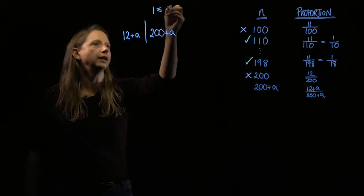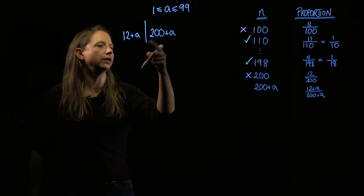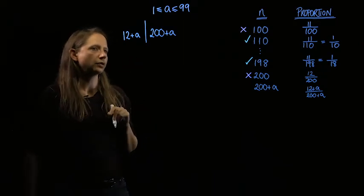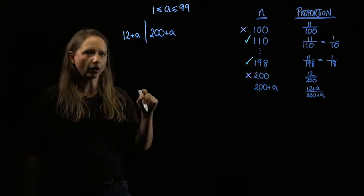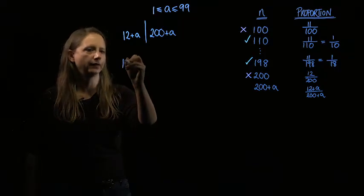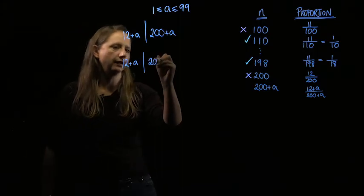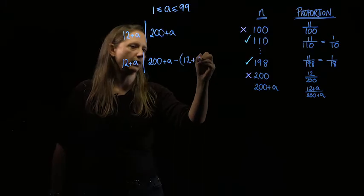We need a to be between 1 and 99. We're just considering the values that start with a 2. Well, if 200 plus a is in the 12 plus a times table, then so is 200 plus a minus 12 plus a. So we need 12 plus a divides 200 plus a minus 12 plus a.